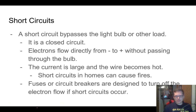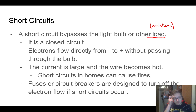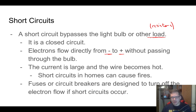Short circuits: a short circuit is something that bypasses the load — in our class we'll define the load as a resistor. Light bulbs are really just resistors that make light. Anytime we bypass this resistor or load, we call it a short circuit. Electrons flow directly from the negative to the positive terminal of the battery without passing through the bulb. When this happens, the current becomes very large, the wire gets very hot, and an uncontrolled short circuit in your home can cause a fire.